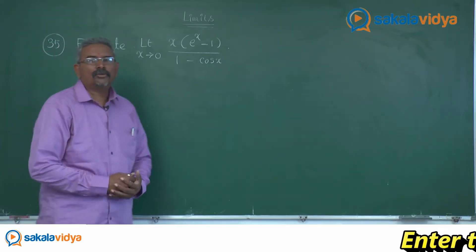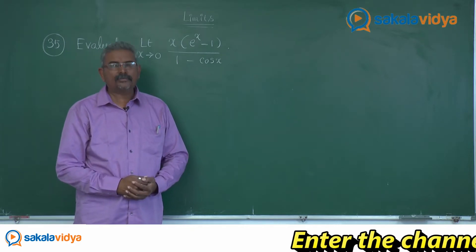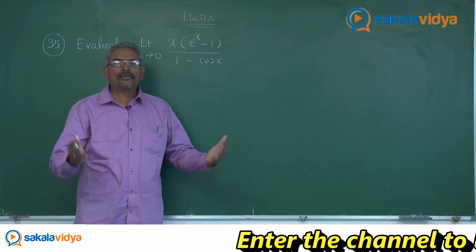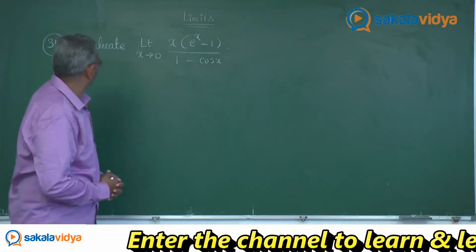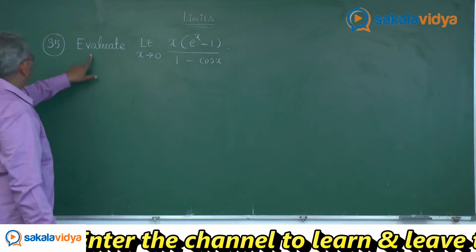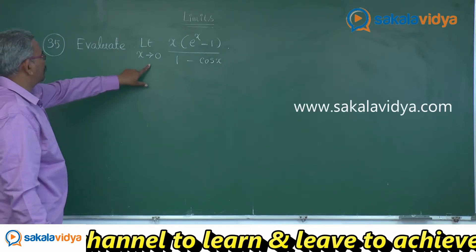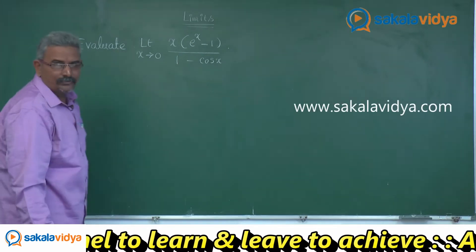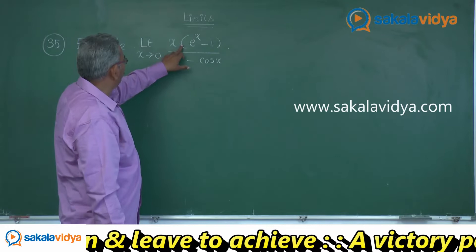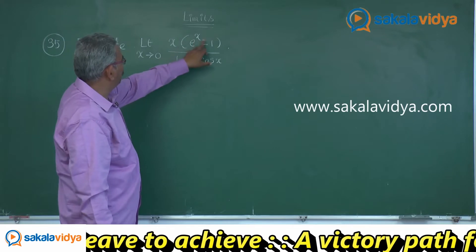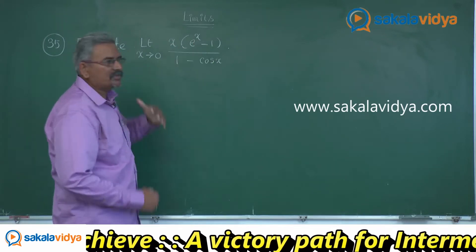Let us solve one more problem on limits. Let me read the question first. Evaluate: limit x tends to 0, x multiplied by e power x minus 1, by 1 minus cos x.